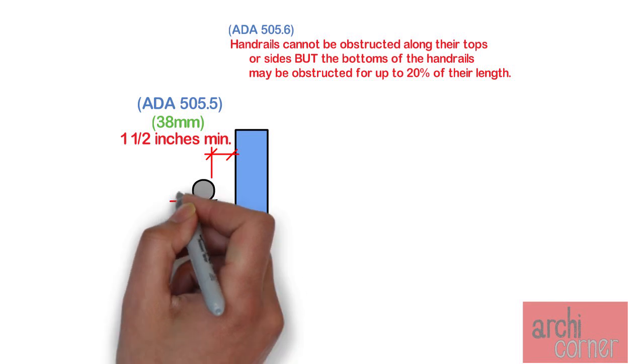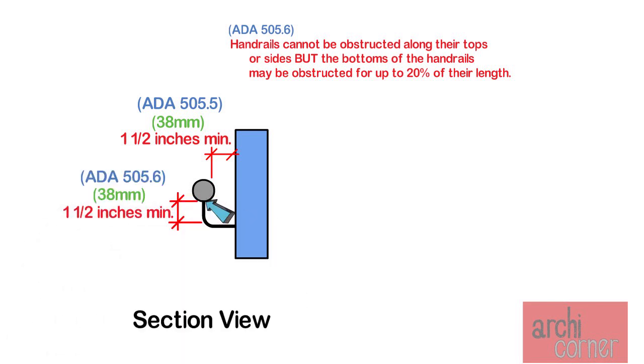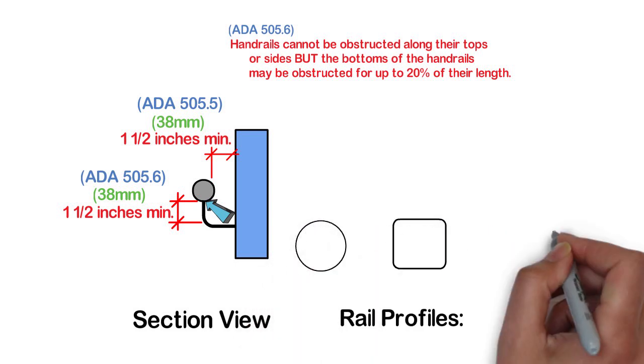Likewise, the handrail support bracket or any other horizontal projection must have one and a half inches clear below the bottom of the handrail's gripping surface.